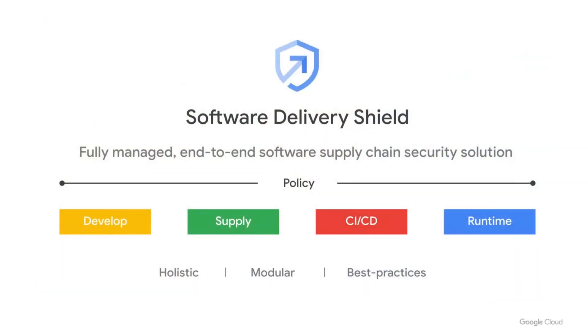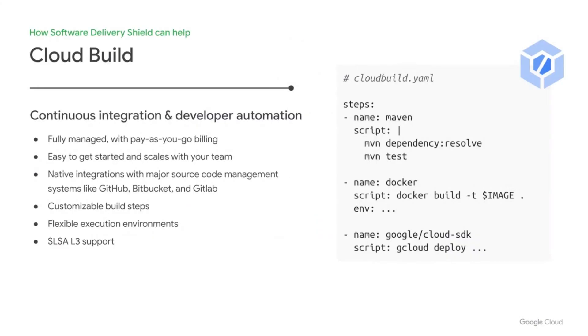So how can Google help you on your modernization journey? You may have heard earlier in the conference about Software Delivery Shield, Google's secure software supply chain solution. Software Delivery Shield covers many areas, and I want to talk a little bit about how it helps with CI/CD. The first service I want to talk about is Cloud Build. Cloud Build is a platform for continuous integration and developer automation. That means that not only can you build and test with Cloud Build, but you can automate other tasks from source code as well. It's fully managed, so you can focus on your core competencies instead of scaling build infrastructure.